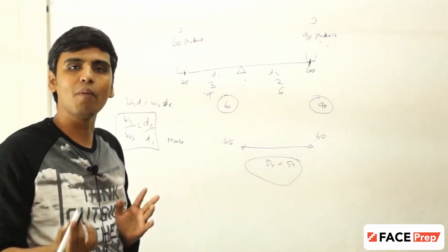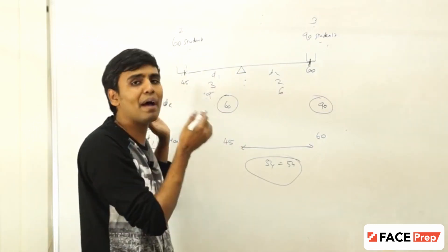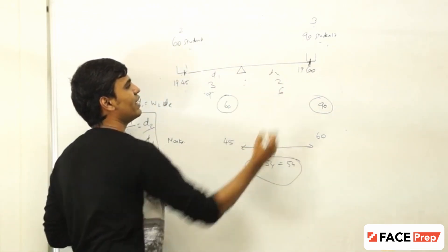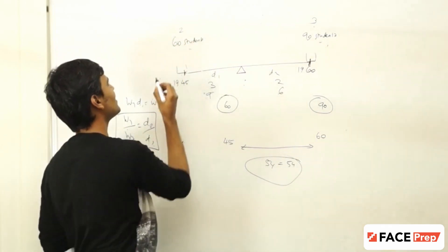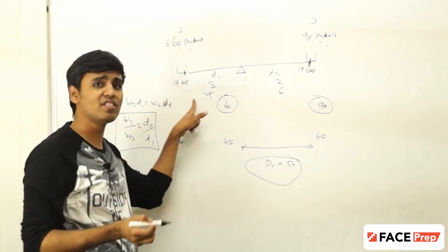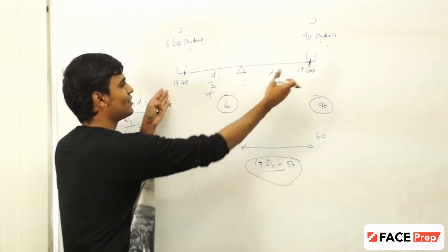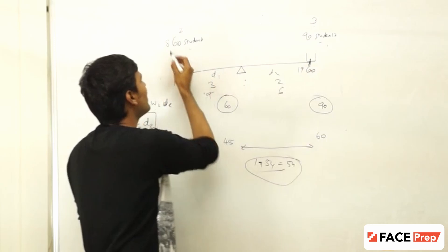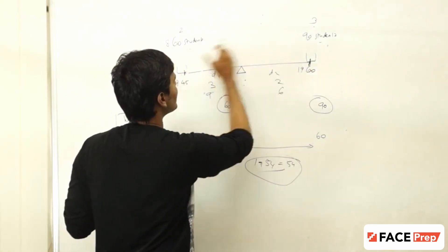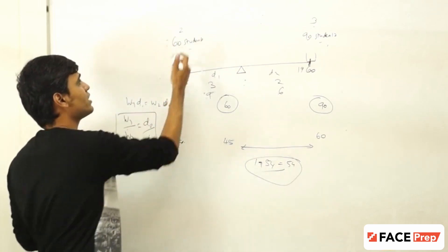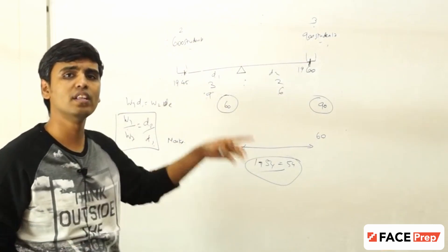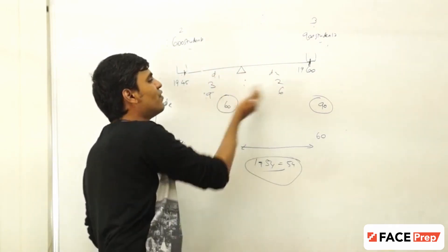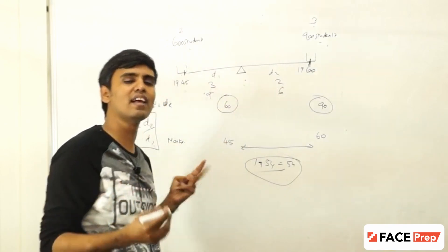What did we do? We never did anything complicated — we just mapped it to a simple seesaw and solved it. Will this change if the numbers change, say 1945 and 1960? The ratio of weights stays the same, so the same 9 will be added, giving 1954. Similarly, if I change 60 and 90 students to 600 and 900, the ratio doesn't change, so the weighted average stays the same. As long as I find the ratio, invert it, find the distances, I get the answer very quickly.